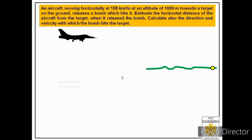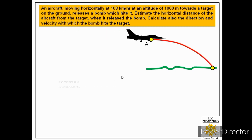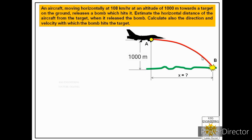We are given the situation that an aeroplane is flying horizontally at 108 km per hour, and at point A it releases a bomb which hits the target on the ground at point B. It is flying at an altitude of 1000 meters towards the target. We are asked to find the horizontal distance x of the aircraft from the target when it released the bomb, that is the horizontal distance between point A and point B.